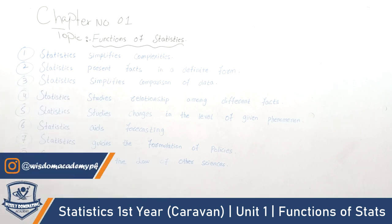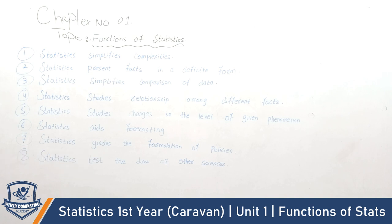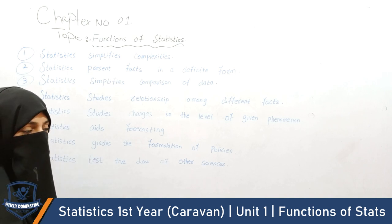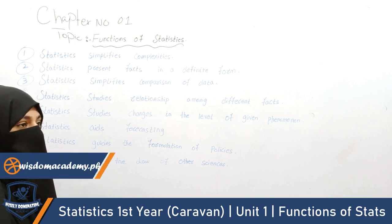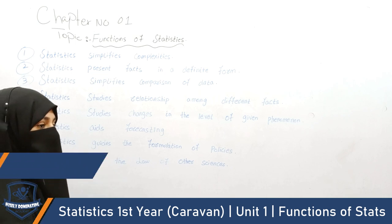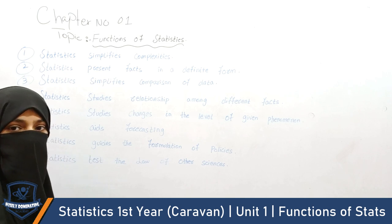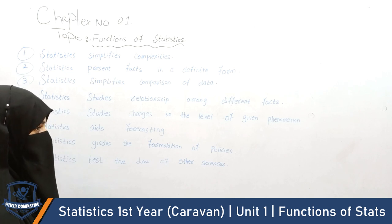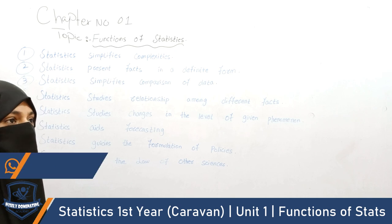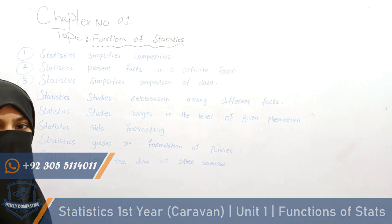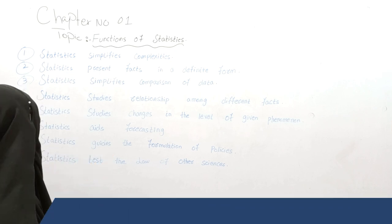Another function of statistics is to enable prediction. For example, if we have sales data for 6 months, we can forecast our sales for the next month or the next 3 to 4 months. This is how statistics is used for making predictions.